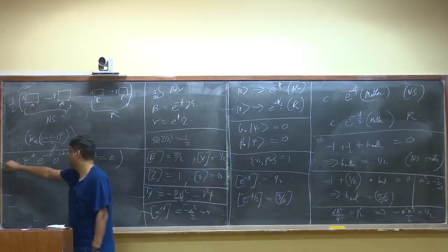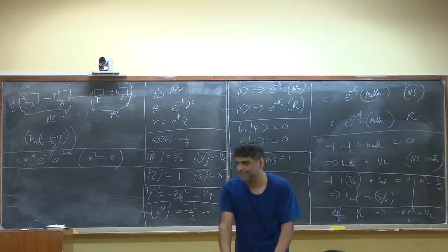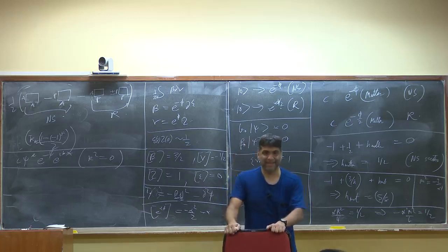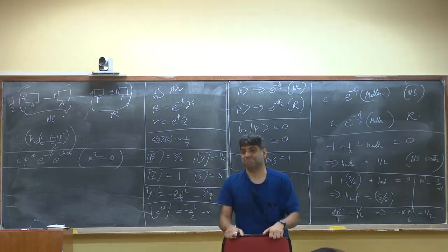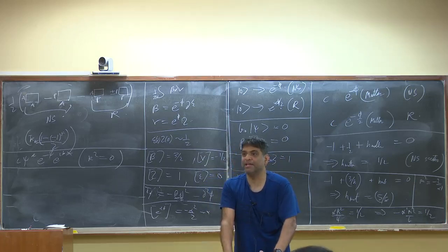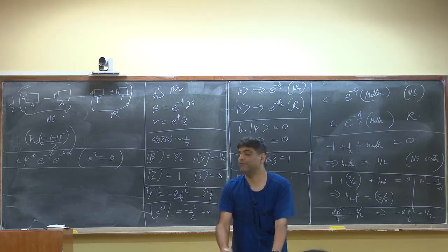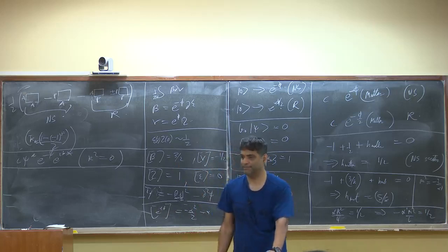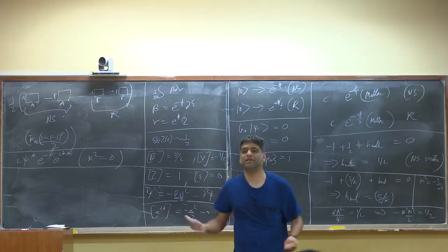Let's focus on the NS sector first. There is something about this that might make you feel very uneasy. What we have done is effectively project out all states with even fermion number. The thing that might make you really uneasy is that states with even fermion number include the state dual to the identity operator. So it sounds like we have projected out all even fermion operators including the identity operator. That's never a consistent thing to do in a quantum field theory — you can't project out the identity operator.